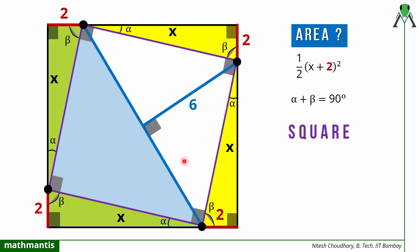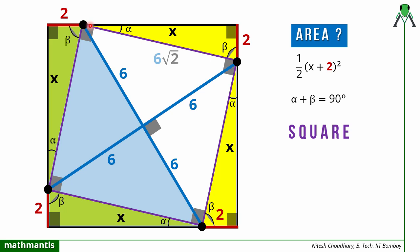Since the inner figure is a square, this line is one diagonal of the square, and extending it gives the other diagonal. The diagonals of a square bisect each other and are equal in length. The given perpendicular length is 6, so each half-diagonal is 6, meaning the full diagonal is 12. Using Pythagoras theorem in the right triangle formed by half the diagonals, the side of the inner square is 6√2.